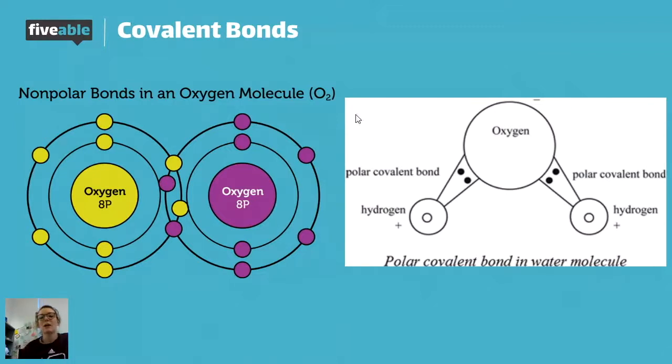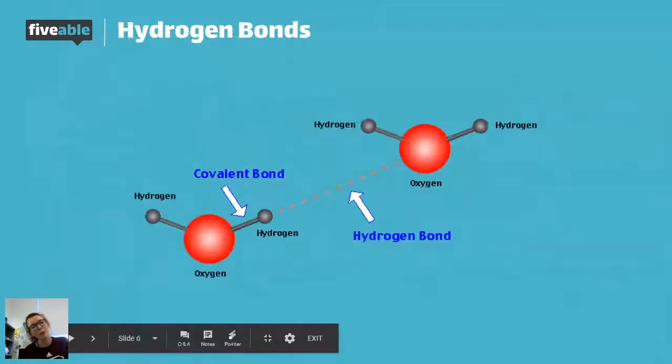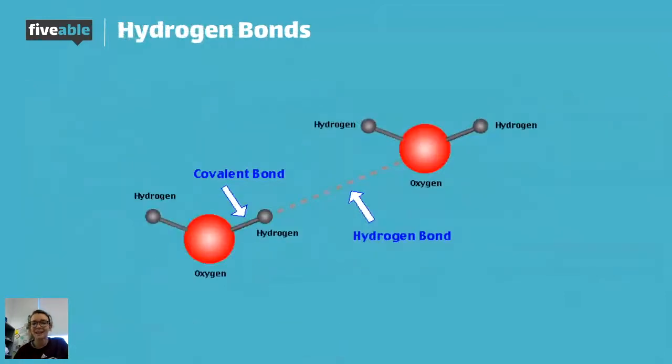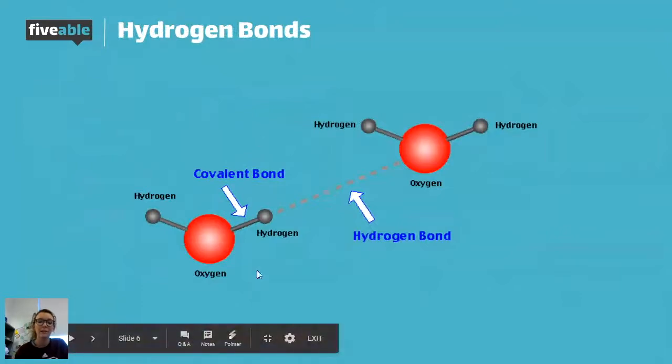Because hydrogen molecules are oftentimes a little bit more positive, they can actually form hydrogen bonds with slightly negative molecules or atoms nearby. Hydrogen bonds, as opposed to ionic or covalent bonds, are between molecules, not within molecules. I like this picture because it shows you the difference. You can see the covalent bond between the oxygen and the hydrogen atom - that's a polar covalent bond there.